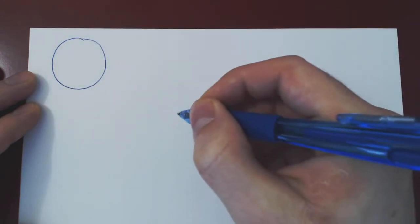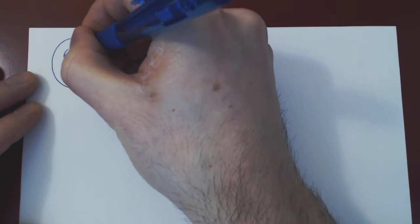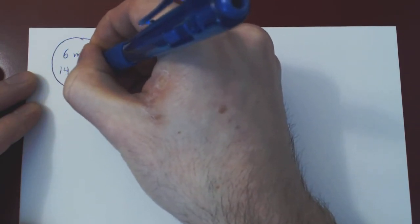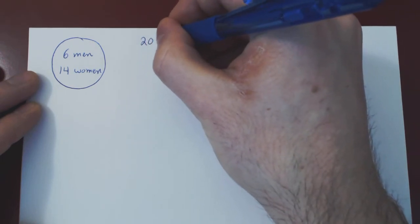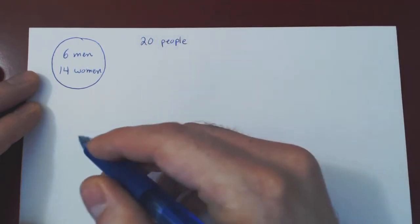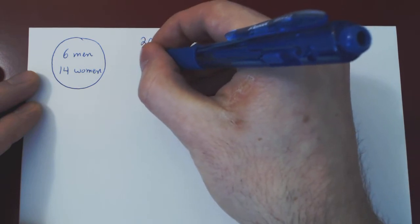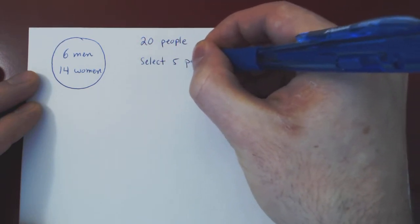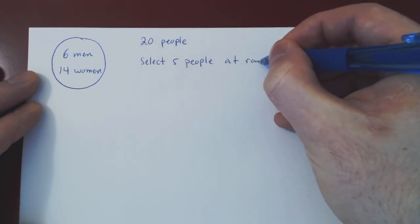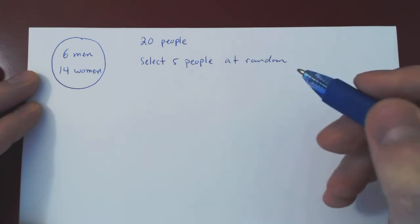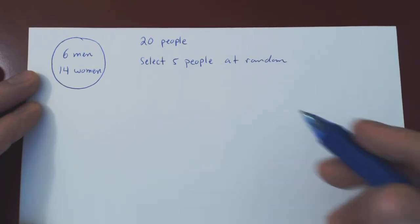Consider the following situation: suppose we have a group of 20 people consisting of six men and 14 women. They are co-workers, so 20 people in total. For whatever reason, a committee of five people must be formed, and to be fair, the members of the committee will be randomly selected. We select five people at random and will compute different probabilities given this setup.